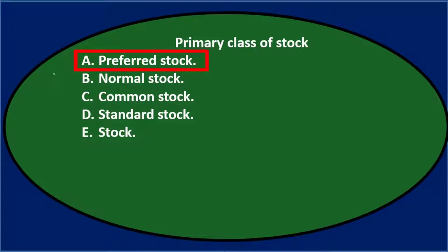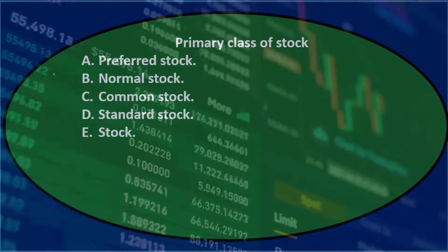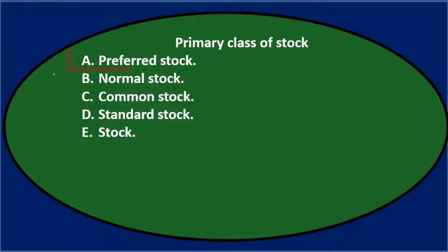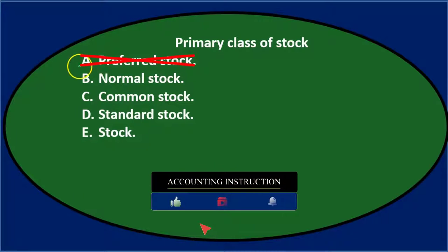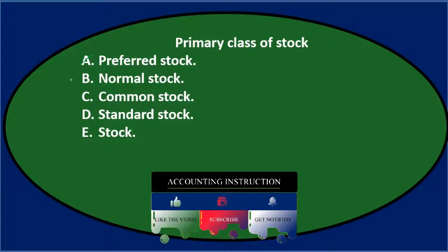Preferred stock is not the primary class — that's a special or different type of stock. It's preferred in the sense that it gets paid dividends before other stocks, but it has benefits and negatives relative to other types, so it's not preferred stock. Normal stock seems like it might be right, so I'll keep that for now.